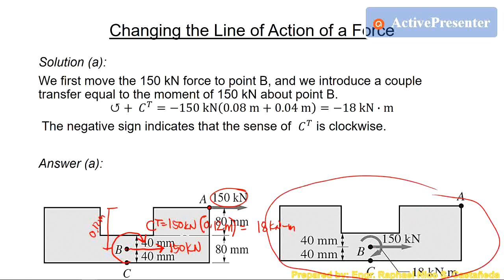So the final answer for letter A is an equivalent force couple system: a 150 kN force transferred from point A to point B, plus a couple transfer which is a clockwise moment of 150 kN times 0.12 meters measured from point A to point B, which equals 18 kN·m.